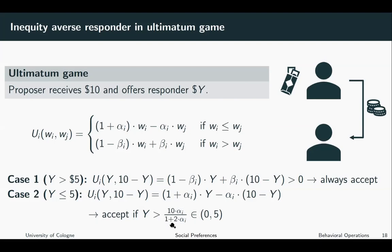And we can see that for alpha i greater than zero, this share is somewhere between zero and five. Okay, the larger alpha i is, the more the responder suffers from the disadvantageous inequality or the envy, and the larger is the amount of money the proposer has to offer for making the responder accept the offer.